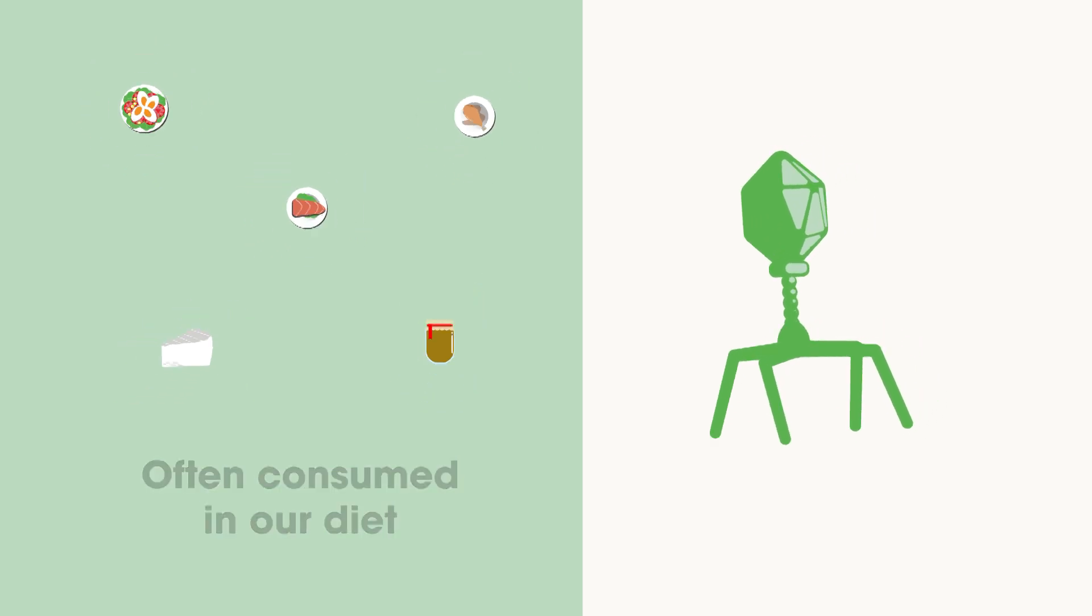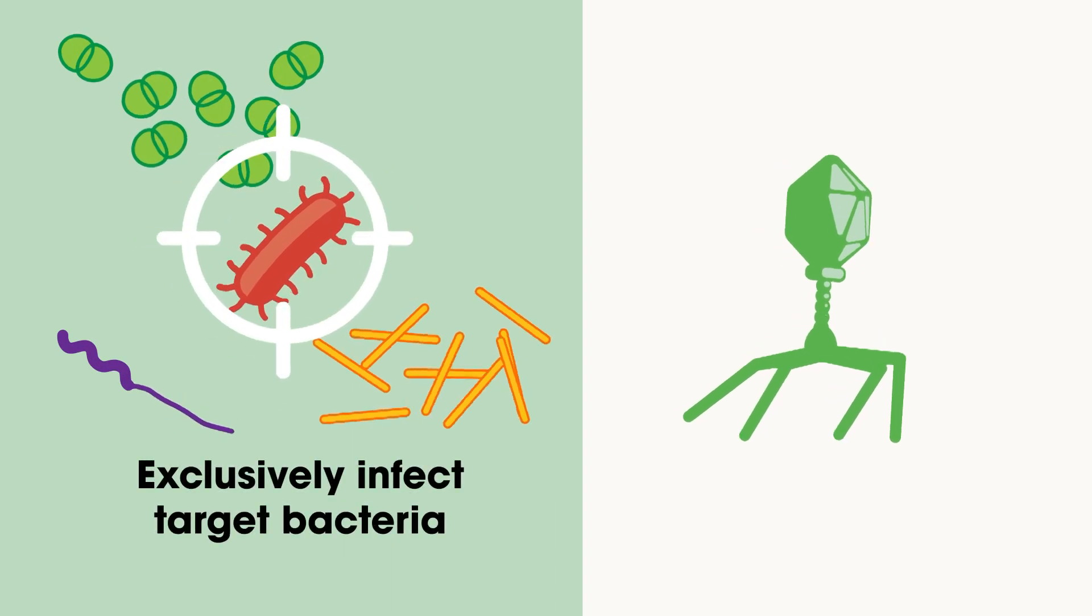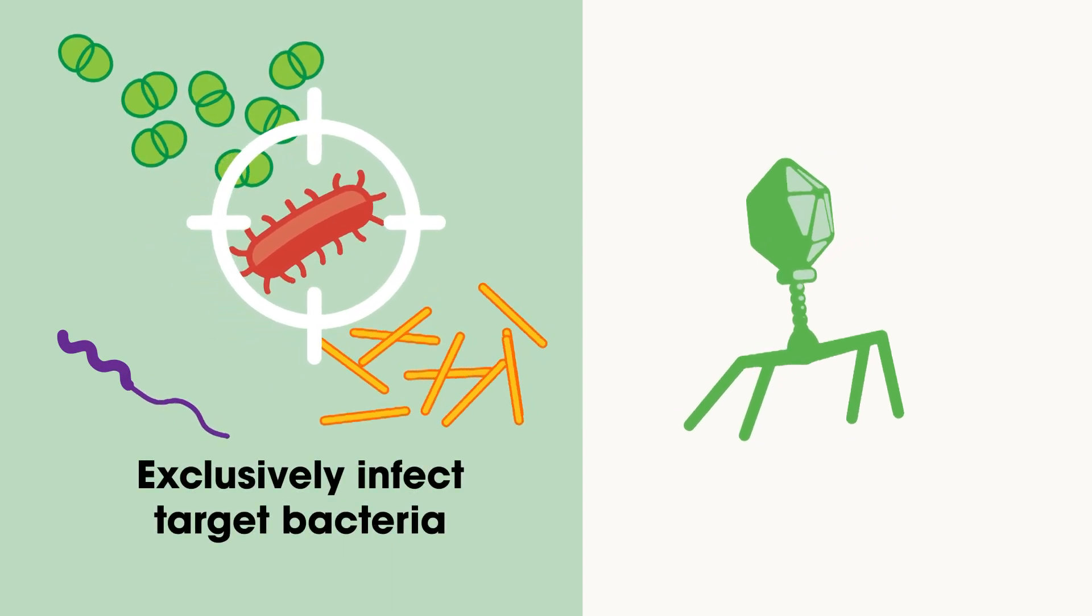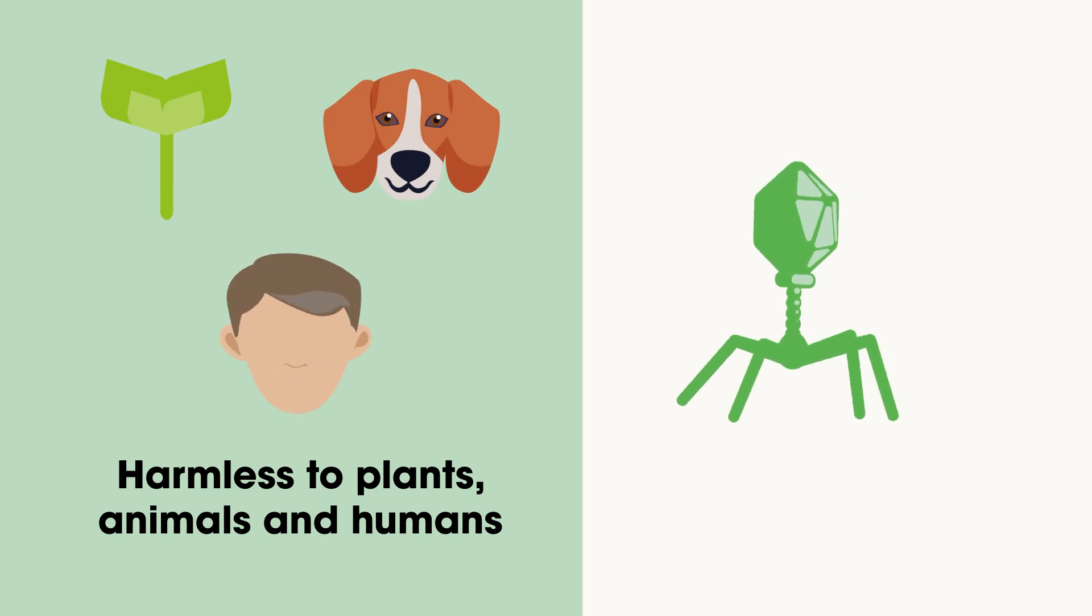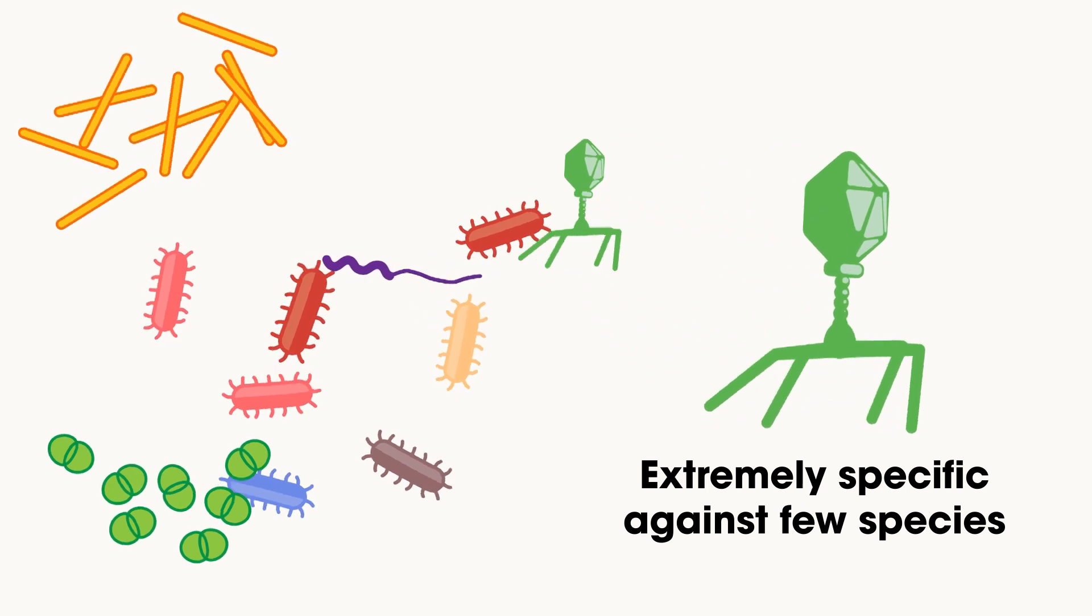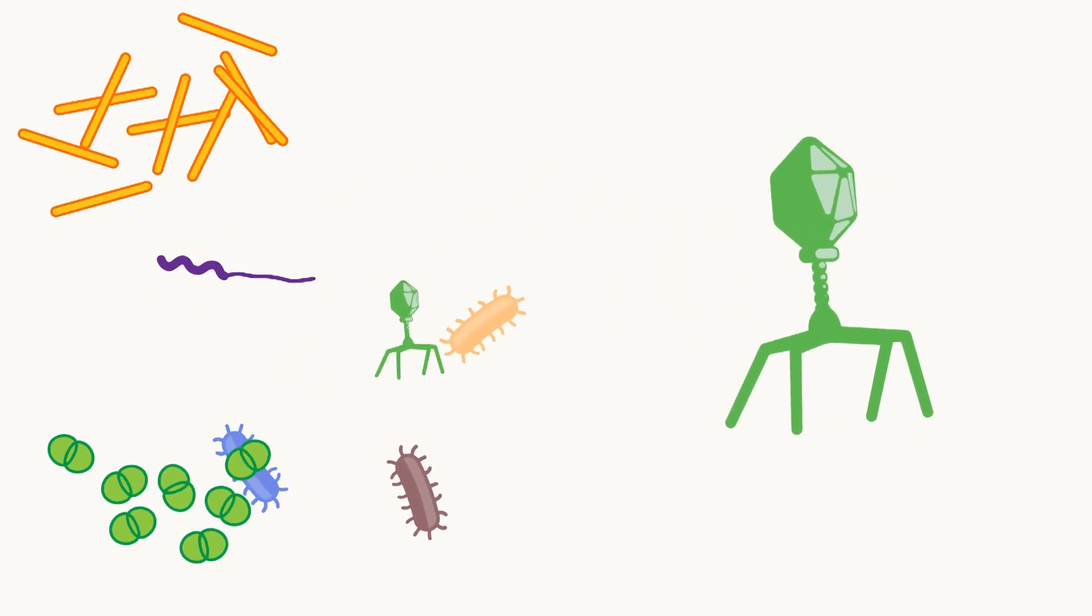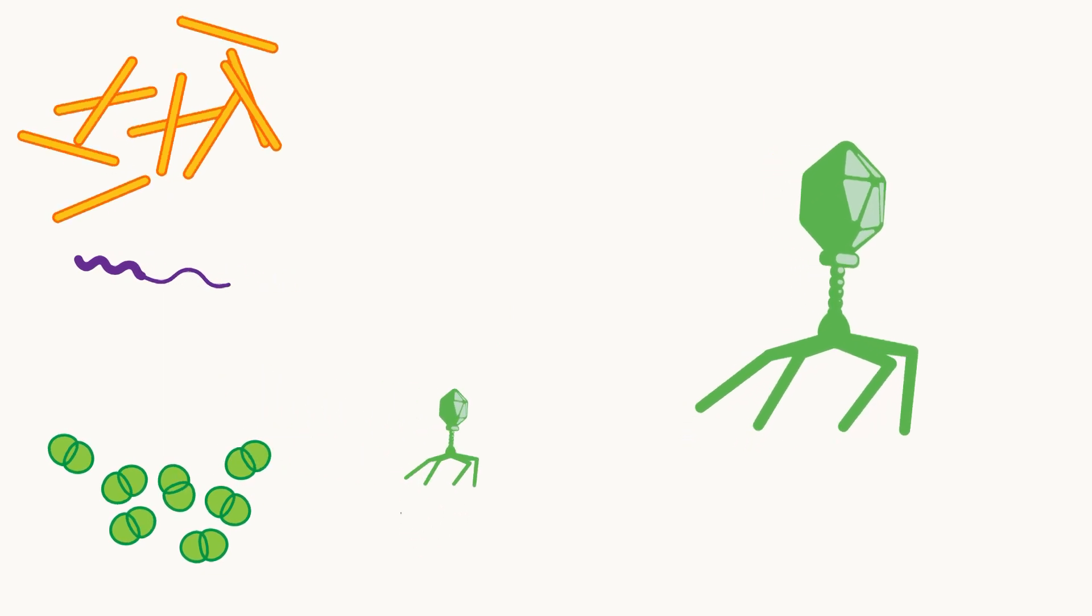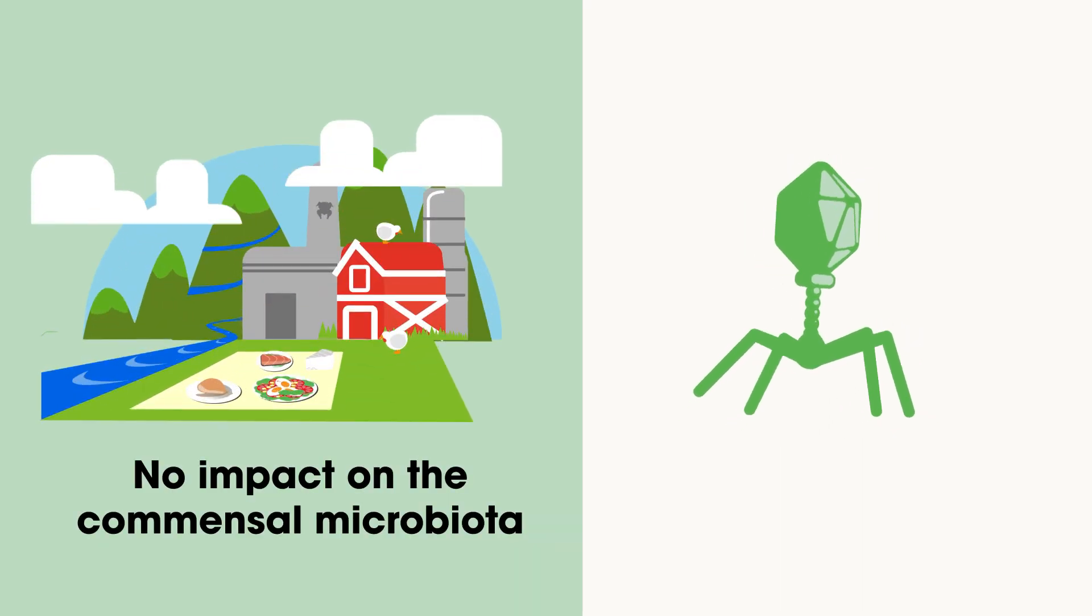And why bacteriophages as food safety agents? Because phages exclusively infect and kill specific target bacteria, being innocuous to plants, animals and humans. They are extremely specific. Each phage can typically infect one or few strains within a single species, and less frequently, few strains of different species within the same genus. So they do not affect other bacteria present in the food, the host or the environment.